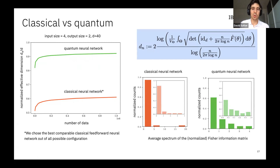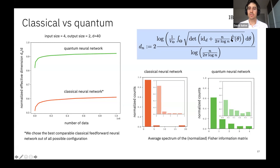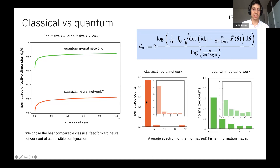To understand what is going on, we needed to look at how effective dimension scales, which goes back to the determinant of the Fisher information matrix. The determinant of a normalized matrix is large if the spectrum or eigenvalues are uniformly spread, and it would be small if some eigenvalues are very small and some very large, since the determinant is a product of eigenvalues. We plotted the spectrum of the Fisher information matrix and saw that classical models have a very unevenly distributed spectrum — some eigenvalues very small and some rather large — while the quantum model has a quite evenly distributed spectrum.